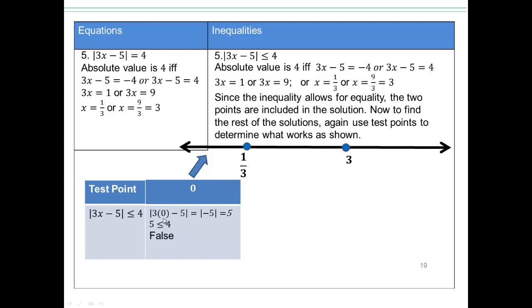So, if I pick 0, look what happens. 3 times 0 is 0, absolute value of negative 5 is 5, and 5 less than or equal to 4 is a false statement, isn't it?